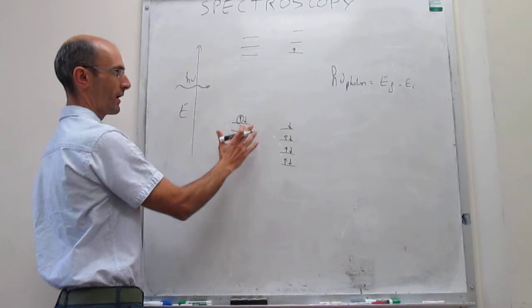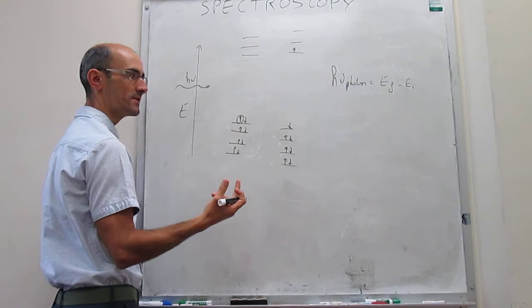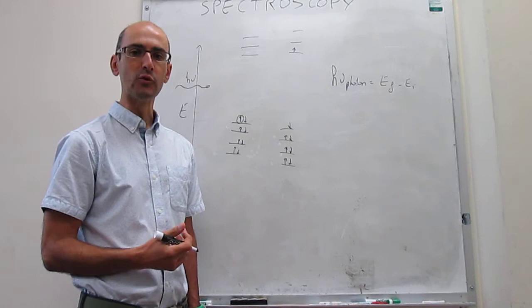We have an initial state represented by the occupation of orbitals, and a final state also represented by orbital occupation. The difference between those two energies allows us in principle to calculate the energy or wavelength of the photon you need to shine, and predict the spectrum. But here's the problem.